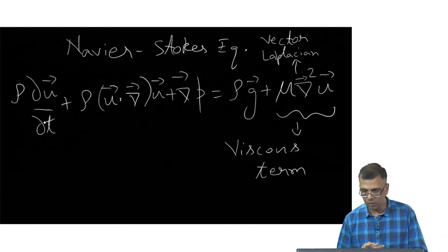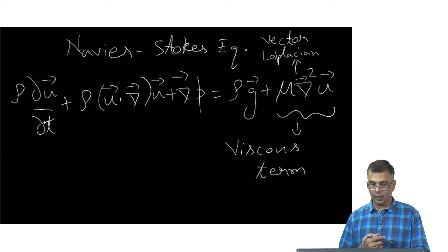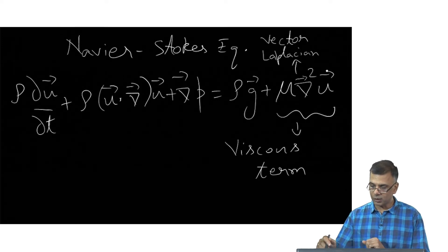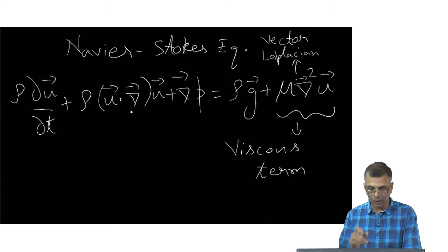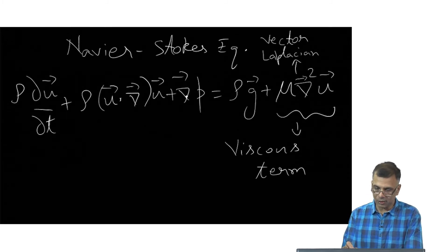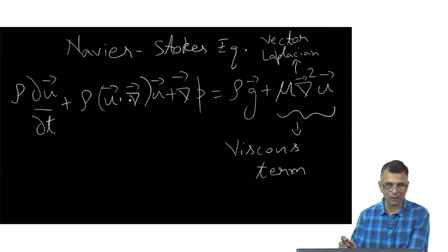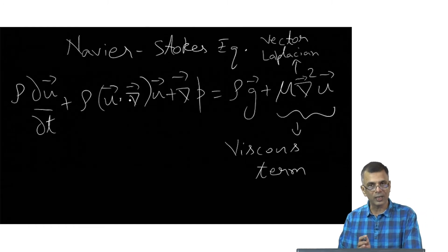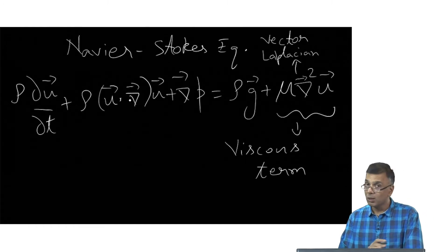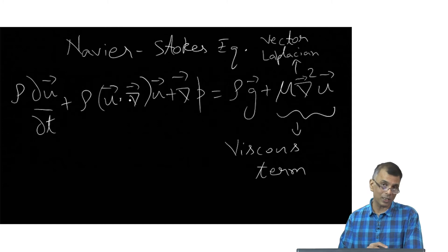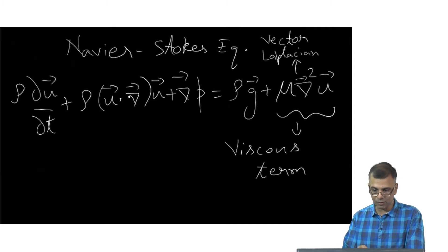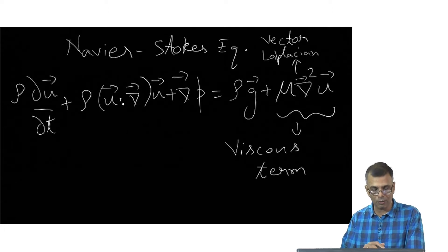The first thing to notice is that if the viscous term were not there, all these terms involve only spatial gradients — first derivatives like d/dx or d/dy — no second derivatives. So the Euler equation has only first spatial derivatives in space, and a first derivative in time.